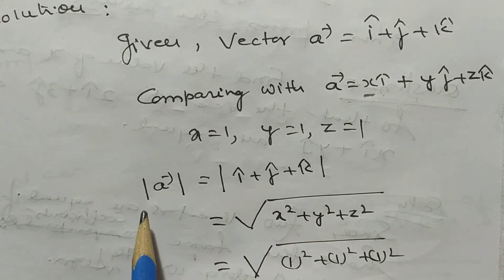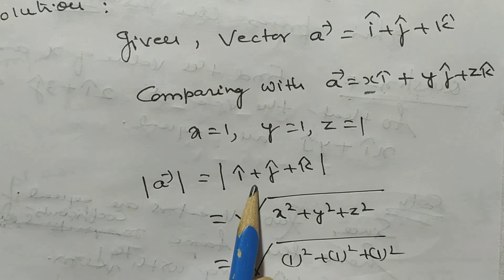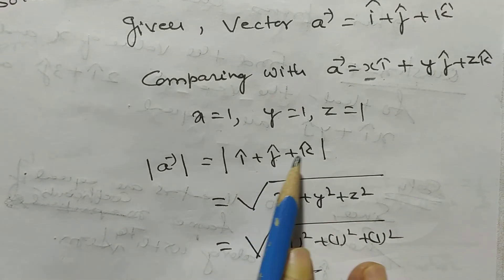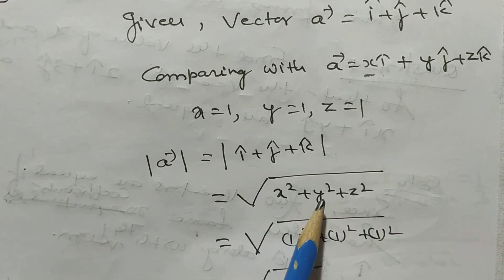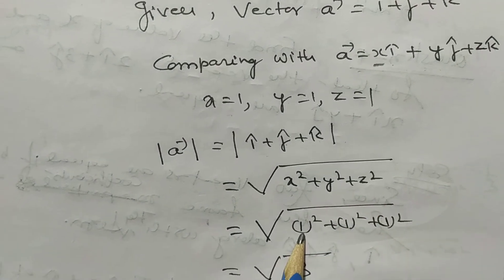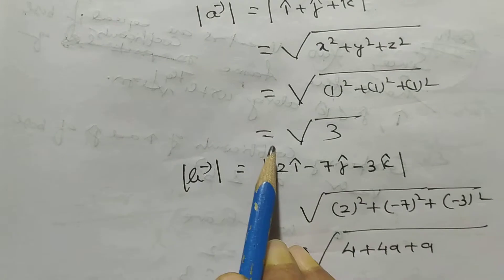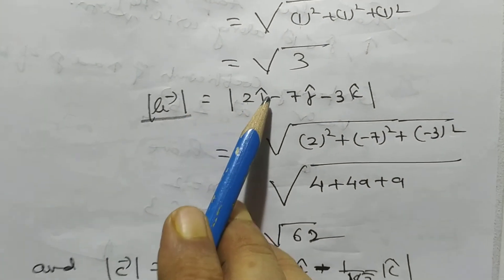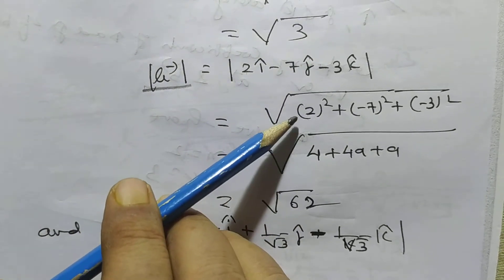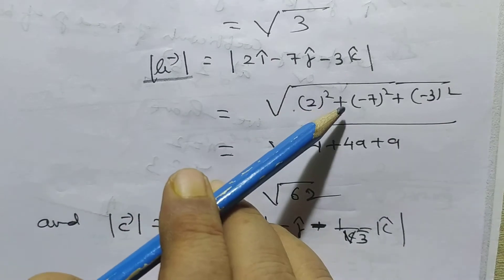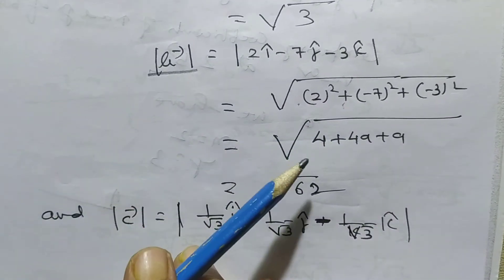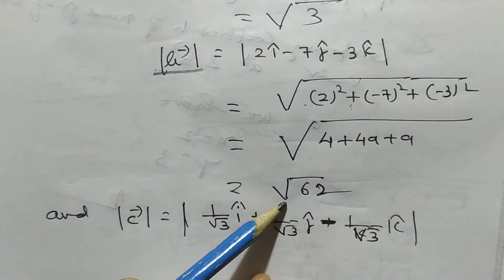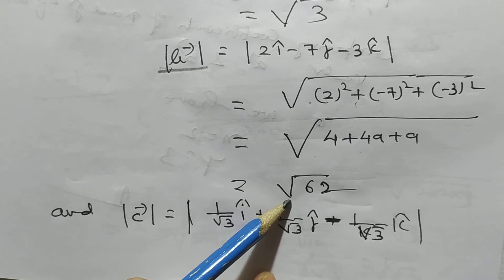So, the magnitude of vector A equals |i-cap + j-cap + k-cap|, which is √(x² + y² + z²) = √(1² + 1² + 1²) = √3. Similarly, the magnitude of vector B equals |2i − 7j − 3k|, which is √(2² + (−7)² + (−3)²) = √(4 + 49 + 9) = √62.